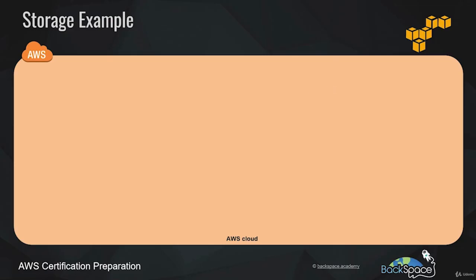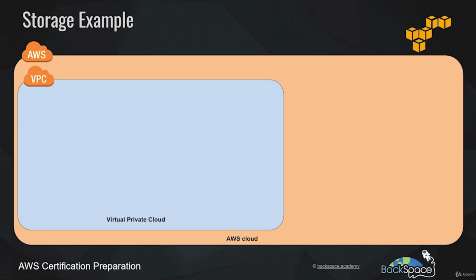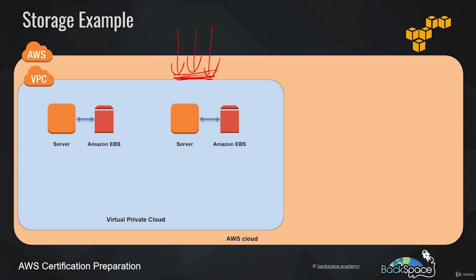Let's look at some examples of using AWS storage services. We can create a VPC inside the AWS cloud — a virtual private cloud that is our own private space within AWS, an impenetrable fortress against attack where no one can enter without us allowing it. Let's say we launch two servers in our VPC and want them to have access to stored data. In a normal environment, you'd add a hard drive to a server — in the same way, we can attach an Amazon Elastic Block Storage device to our servers, giving us high-speed access to our data.